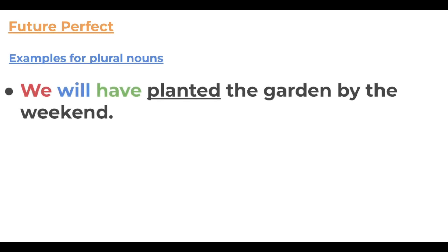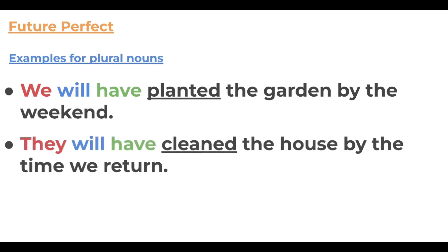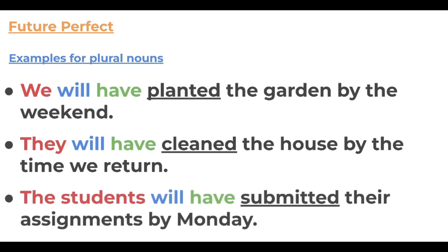With plural nouns: 'We will have planted the garden by the weekend.' 'They will have cleaned the house by the time we return.' 'The students will have submitted their assignments by Monday.' With plural subjects — we, they, the students — the structure stays exactly the same: will + have + past participle. Nothing changes.